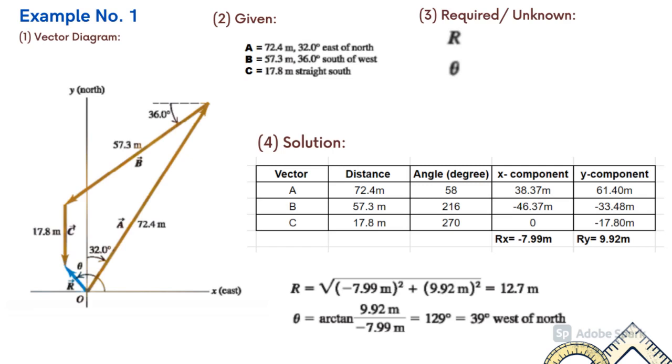Lastly, get the sum of all x-components, that is equal to negative 7.99 meters. And the sum of all y-components, that is equal to 9.92 meters. The magnitude of the resultant vector is equal to the square root of rx squared plus ry squared. Theta is equal to arctan of ry over rx, which is equal to 129 degrees with respect to the positive x-axis counterclockwise direction.